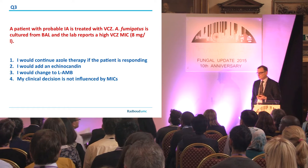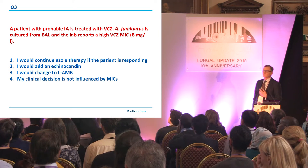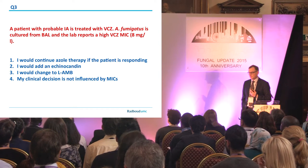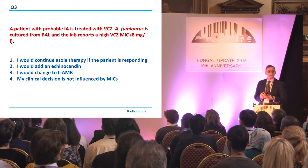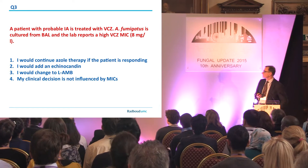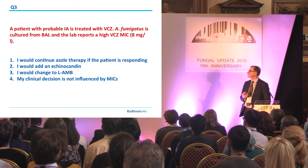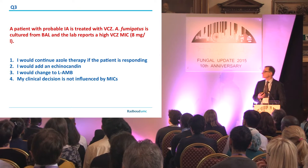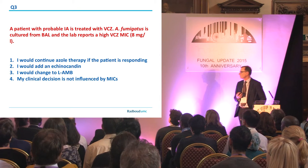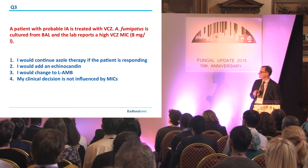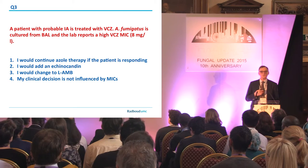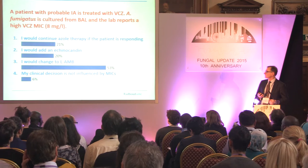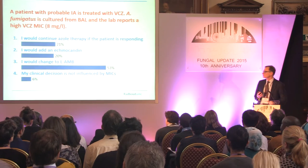The question now is what do you do with the results. If you have a patient with probable invasive aspergillosis treated with voriconazole, and you culture Aspergillus fumigatus and the MIC is high — is 8 — when it comes back from the lab, what would you do? Would you continue with voriconazole if the patient is responding? Would you add an echinocandin? Would you change to liposomal amphotericin B? Or is your clinical decision not influenced by MICs? Most of you would change to liposomal amphotericin B — so change to another class.